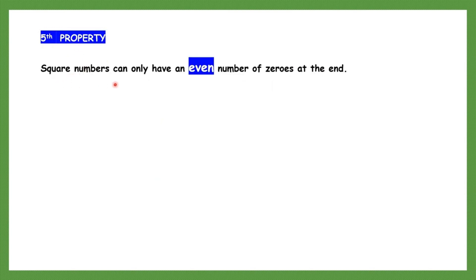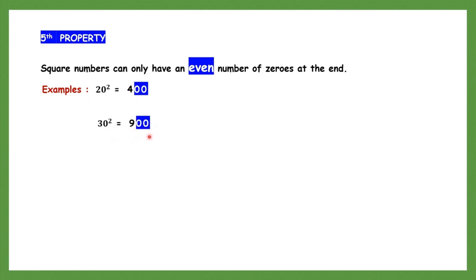The fifth property: square numbers can only have an even number of zeros at the end. That means they can have 2, 4, or 6 zeros — not an odd number of zeros like 3, 5, or 7. For example, 20 squared ends in 2 zeros, 30 squared is 900 ending in 2 zeros, 40 squared ends in 2 zeros. Square numbers can only have an even number of zeros. That is the fifth property.